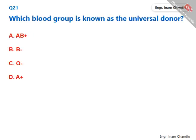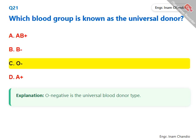Which blood group is known as the universal donor? O negative is the universal blood donor type. The correct answer is C. O.